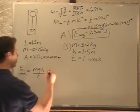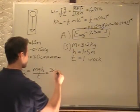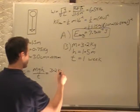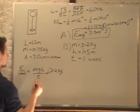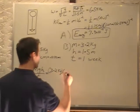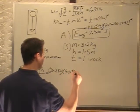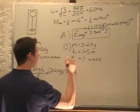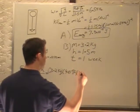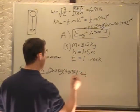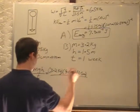So M, 3.2 kilograms, times our g of 9.81 meter per second squared, times height, 1.5 meters, divided by one week.